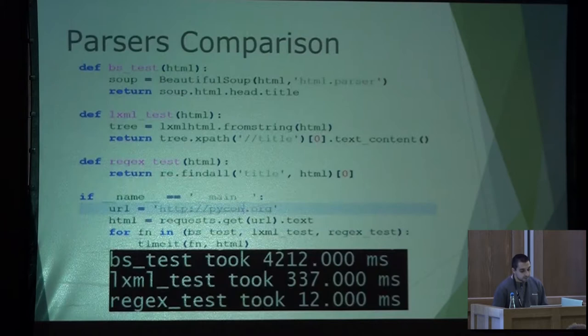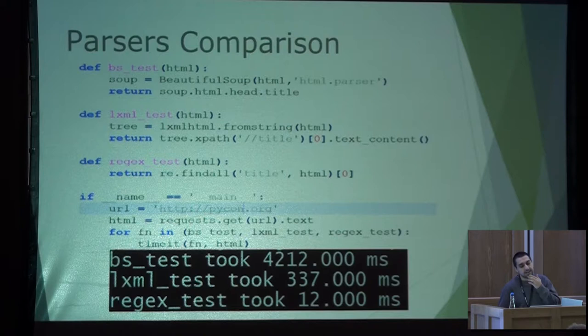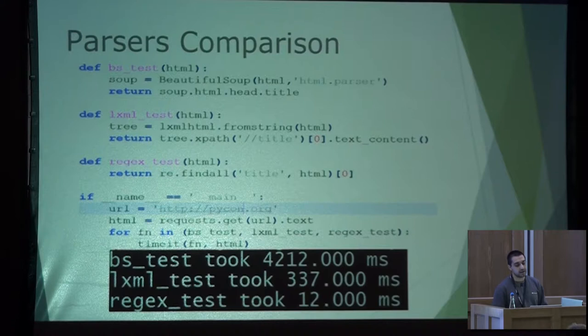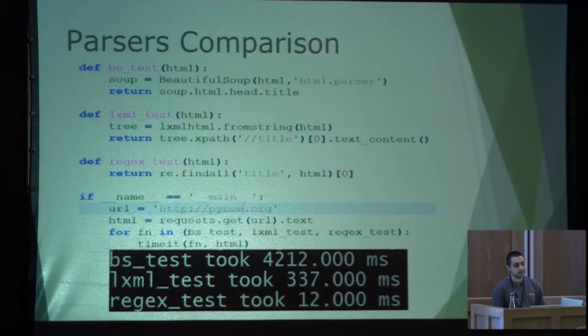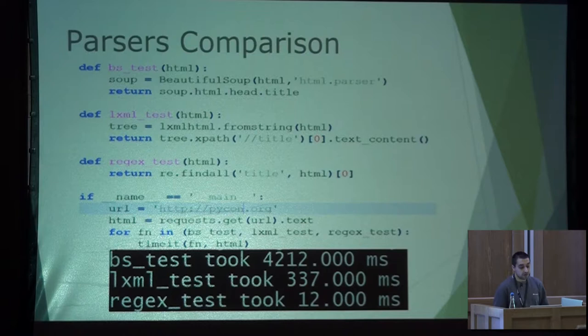The main disadvantage of BeautifulSoup is that it is a little slower than other solutions like LXML or regular expressions. If we want to use regular expressions, the solution is faster than using BeautifulSoup daily. In this parsers comparison, we can see that with BeautifulSoup, extracting the title of the page took 4 seconds, while with regular expressions, the same operation takes 12 microseconds. It's a big difference.